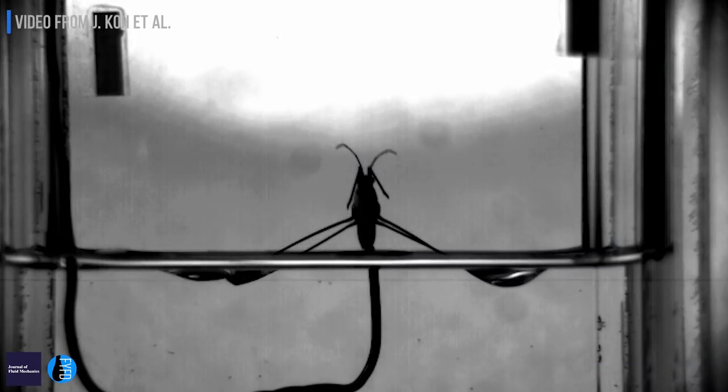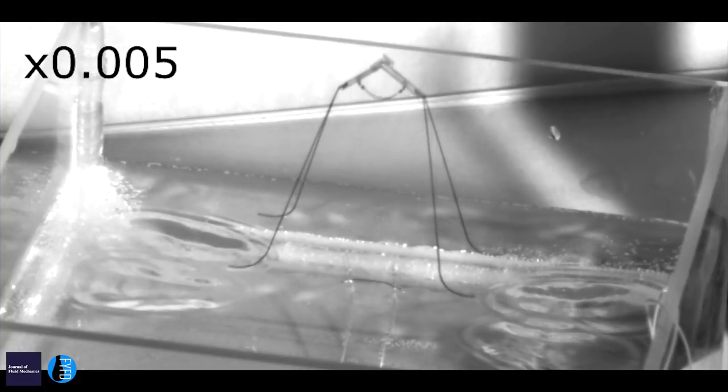One of the observations recently is how they leap, they completely detach and leap off the surface. Some researchers have built biomimetic robots that travel interfaces that could be used for things like environmental monitoring and that sort of thing.